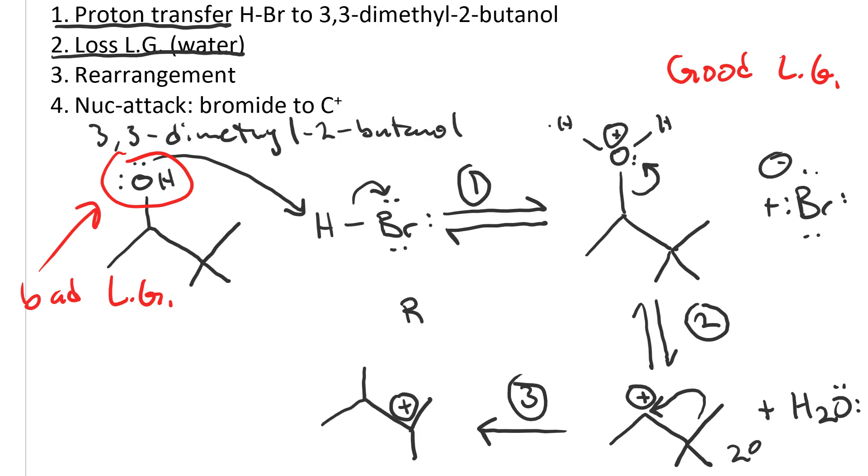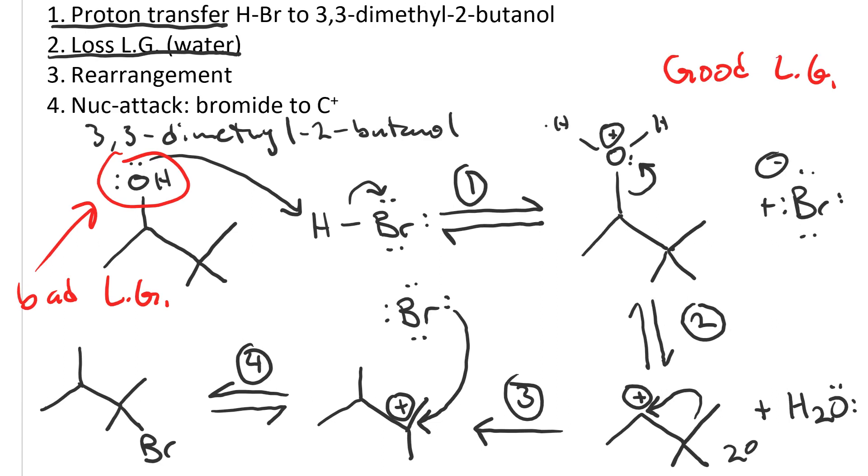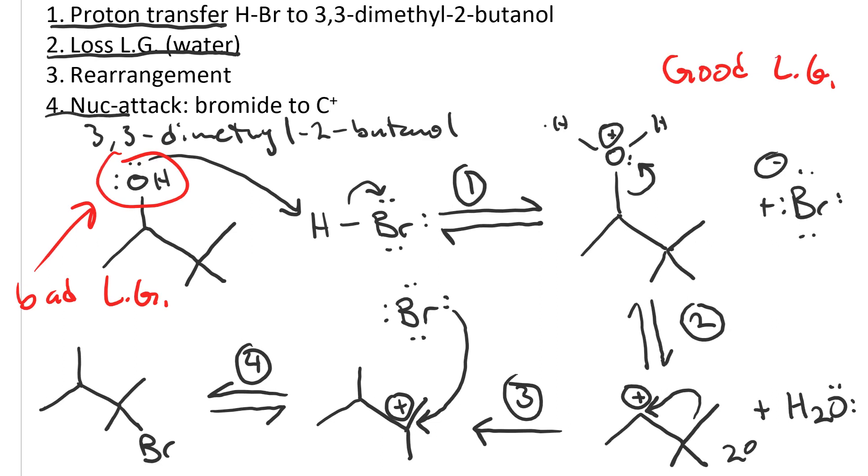Now we still have a bromide ion that was produced in the first step. That can perform nucleophilic attack on our carbocation, resulting in this product. Step four was nucleophilic attack. Note that I've drawn this with a double headed arrow, because nucleophilic attack is reversible when the nucleophile is also a good leaving group, as bromide is.